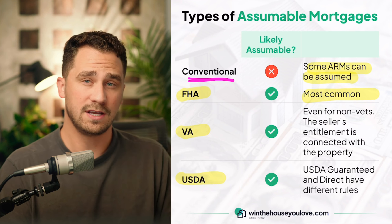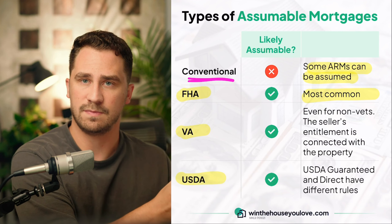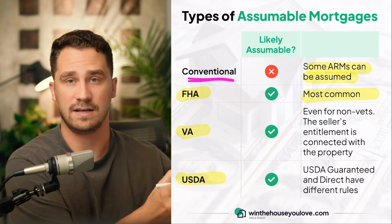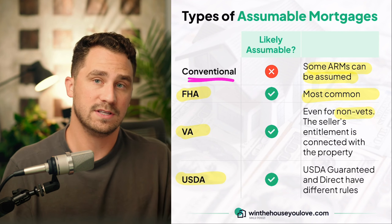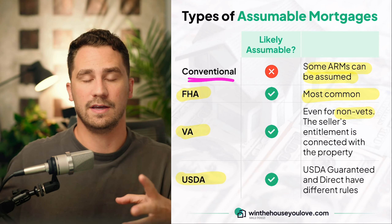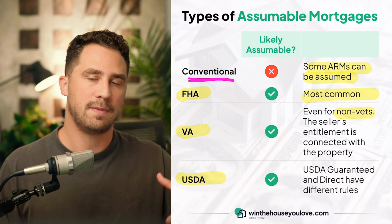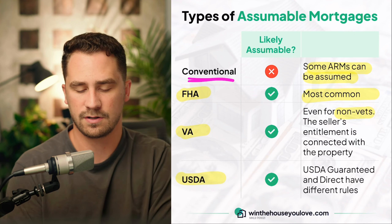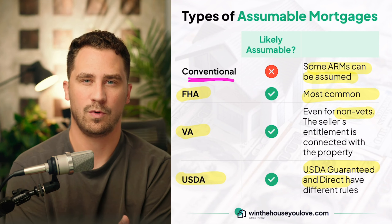VA is a little bit of an outlier. If the seller has a VA loan, it's very likely they were a veteran or maybe a surviving spouse. Even if you're not a veteran, you can actually still take over that VA loan, which is great because VA doesn't have any monthly mortgage insurance and usually has really low rates. Now the seller's entitlement is connected with the property, which doesn't hurt you at all, but it could be something the seller might not be interested in — because if they let you assume their loan, it might make it difficult for them to purchase another home with a VA loan. USDA also can be assumed in certain circumstances, though USDA guaranteed and USDA direct have different rules for assumption.